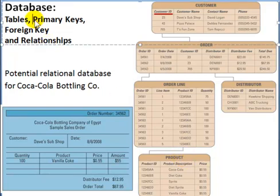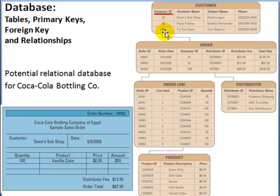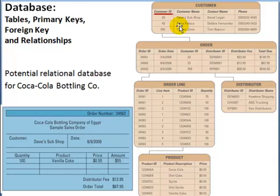For each table, we should have a unique primary key. Each table should have one primary key, and the primary key column for each row should have a unique value. Let's use the customer table as an example. We have three customer IDs and there's no duplication. If I know customer number 43, I can find out a particular row and retrieve its customer name, contact name, and phone number. Customer ID 43 is Pisa Palace, Debbie is the contact person, and here's the phone number.